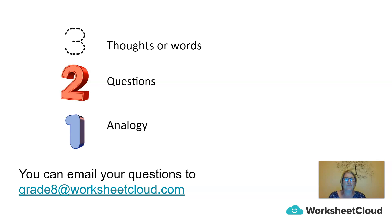To summarize this lesson, I would like you to do a 3-2-1 activity. Write down three thoughts or words you have from this lesson. Then write down two questions you have from this lesson. Then write down one analogy — something not necessarily related to science, but where you can make a link with the work we've covered today. What is an everyday item or something from your life that could be relevant to the density of liquids, and how can you make those connections in your everyday life?